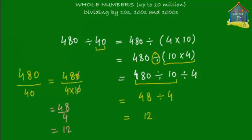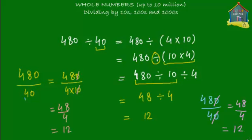There's yet another way of doing this where you don't split up the 40. You simply take 480 and divide by 40 directly — the zero and zero get cancelled out, leaving 48 divided by 4, which equals 12. So that's that.